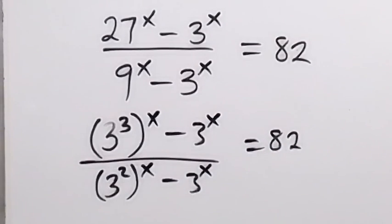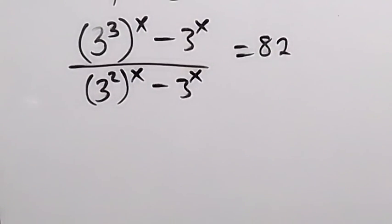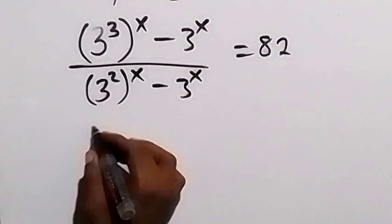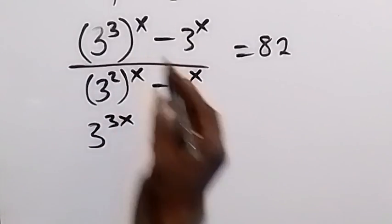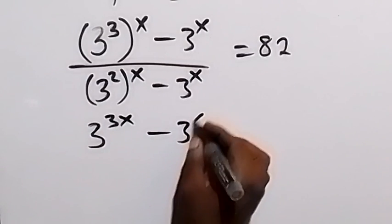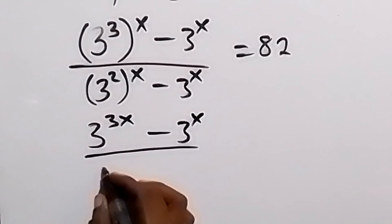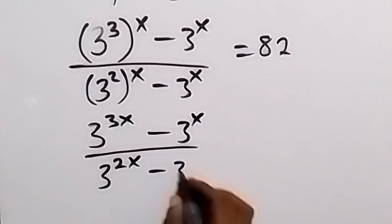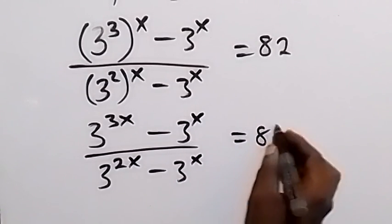And in the same way, we can write this again as 3 raised to the power 3x, because this power multiplies. Then we have minus 3 raised to the power x, divided by 3 raised to the power 2x, then minus 3 raised to the power x, which is equal to 82.